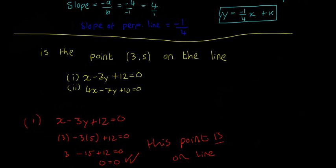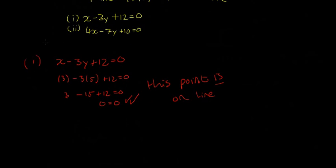Now for the second line, 4x - 7y + 10 = 0.